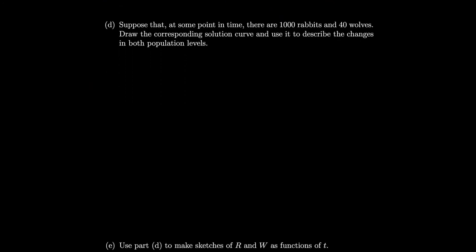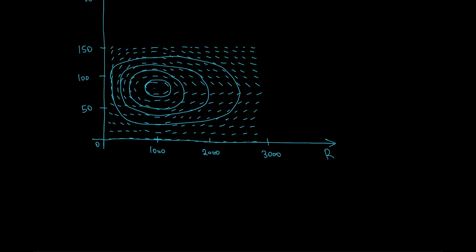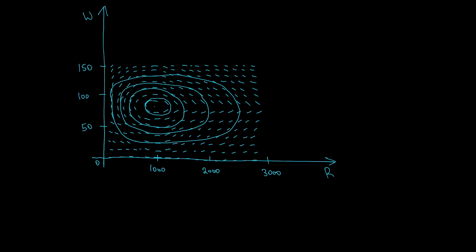Suppose that at some point in time there are 1000 rabbits and 40 wolves. Let's draw the corresponding solution curve and use it to describe the changes in both population levels. So it looks like I should use this solution curve that I drew on the outside.